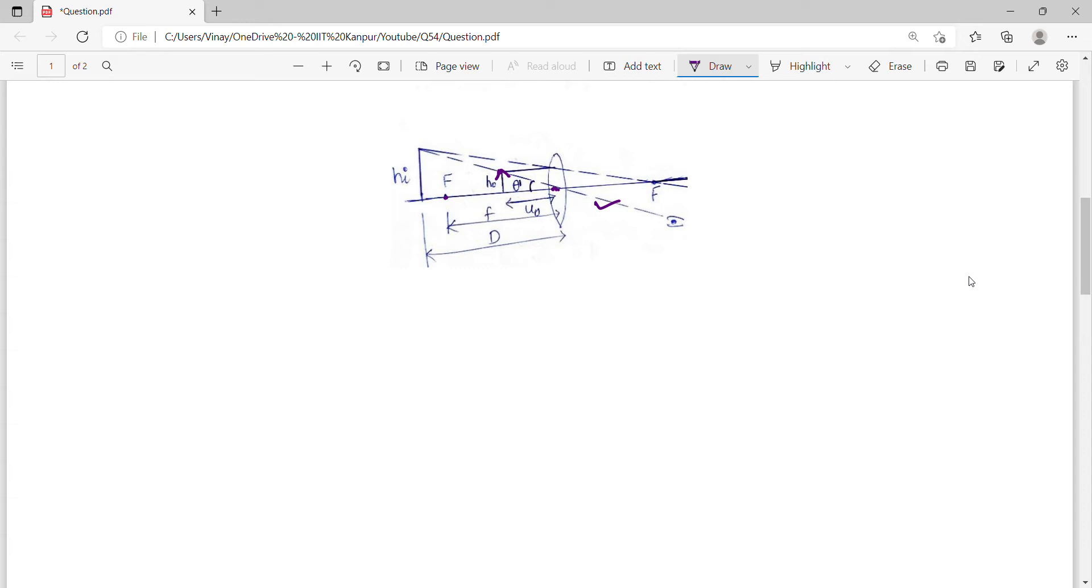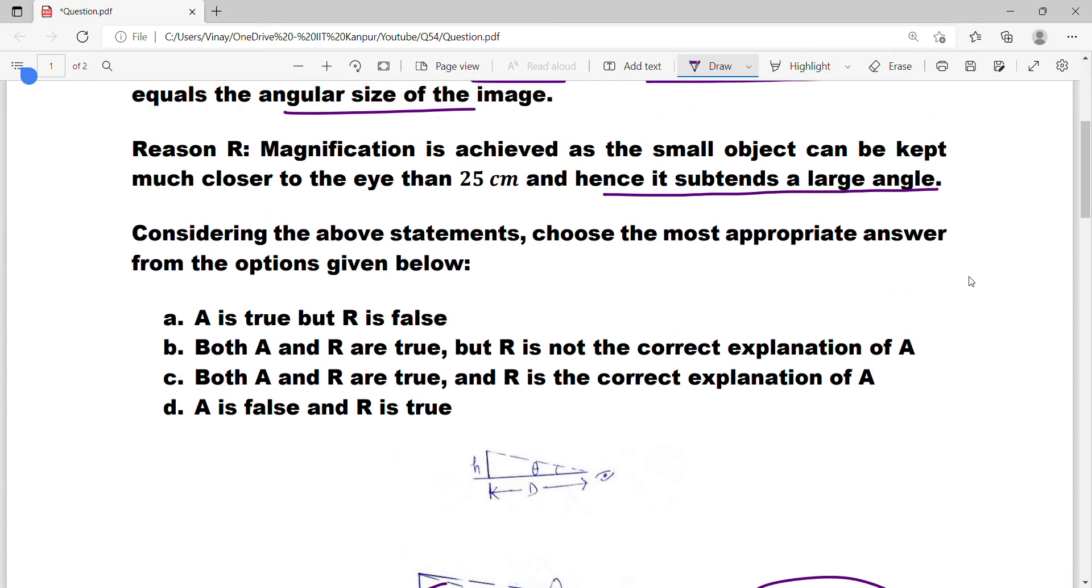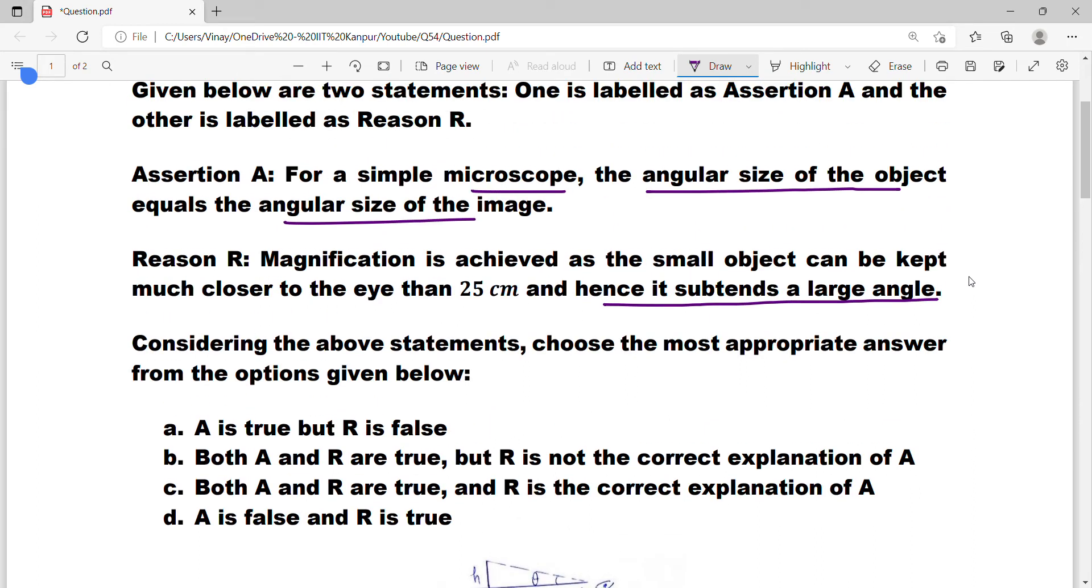This triangle here. Theta i would be h_i upon d. Theta object would be h_object upon u_naught. By congruent triangles, theta i is equal to theta naught. By the way, this is tan theta, but since theta is small, tan theta approximately equals theta. So the first statement is correct individually. The assertion is correct: angular size of the object, theta_o, equals angular size of the image, theta_i.